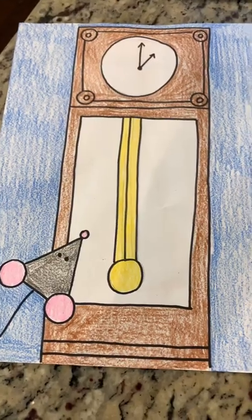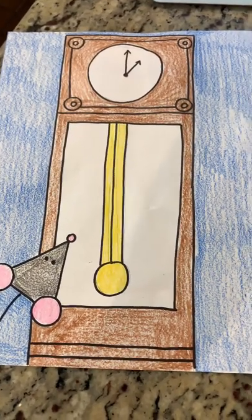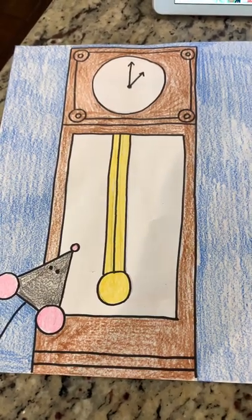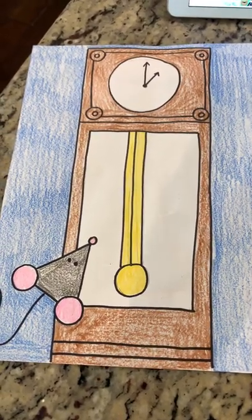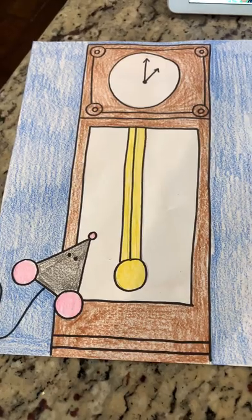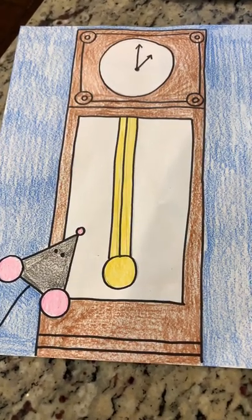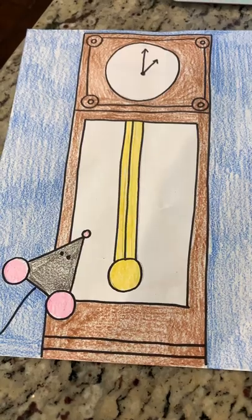Hickory dickory dock, the mouse went up the clock, the clock struck one, the mouse went down, hickory dickory dock. Hi everybody, it's Miss Stacy. I'm here to show you how to do this directed draw lesson of a clock and a mouse. Are you ready to get started? Let's go.